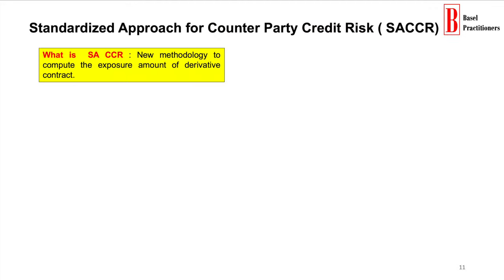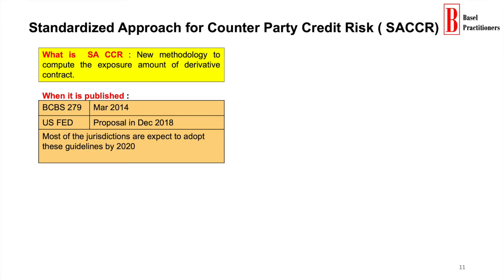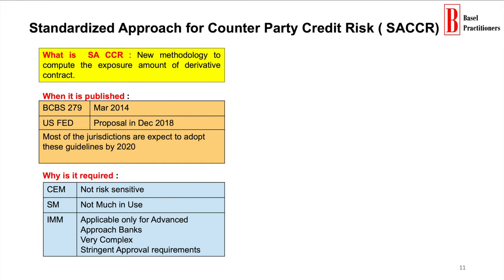SA-CCR is a new methodology to compute the exposure amount of derivative contracts. The BCBS published it in March of 2014, whereas the U.S. Fed published the proposal in December of 2018. It is mainly used because CEM, SM, and IMM have some drawbacks.